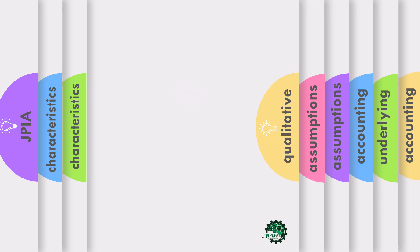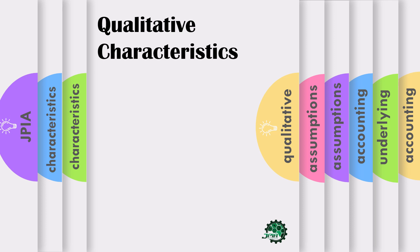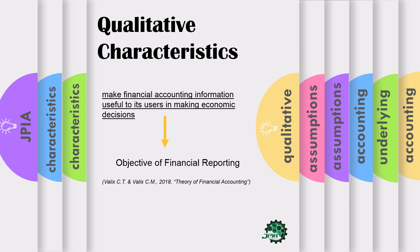Before we proceed to qualitative characteristics, let's have a short recap of the underlying accounting assumptions. Just remember GEPM — an acronym for Going Concern, Entity Concept, Periodicity Concept, and Monetary Unit. That's just a suggestion on how to remember it easily; if you have your own way, you can do that. Now, let's proceed to qualitative characteristics of useful financial information. The revised framework distinguishes between two types of qualitative characteristics necessary to provide useful information — these are the characteristics that our financial reports need to possess in order to be useful to users in making economic decisions.